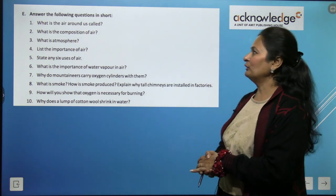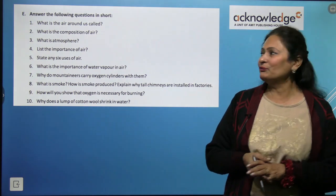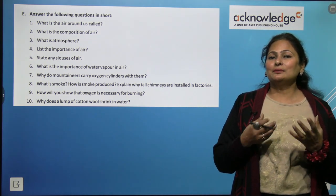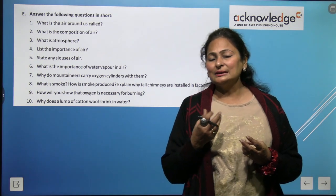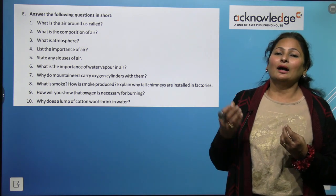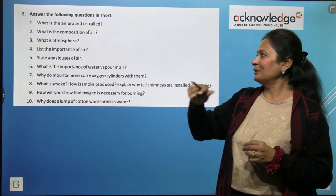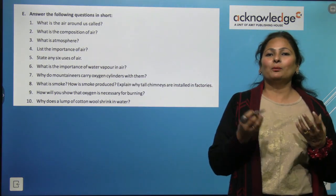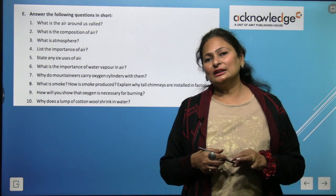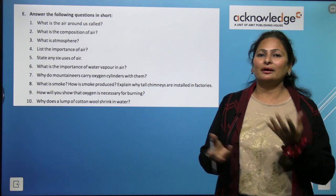Question and answer session: What is air around us? It is called the atmosphere. What is the composition of air? Nitrogen is 78%, oxygen is 21%, and 1% is carbon dioxide, water vapor, dust, smoke, and other gases. What is atmosphere? The layer of air that surrounds the Earth is known as atmosphere.